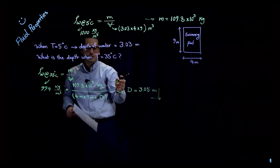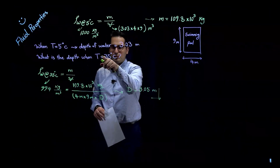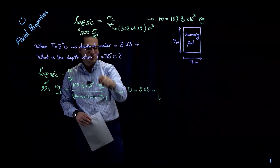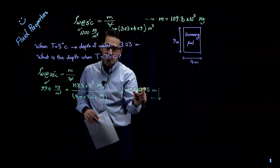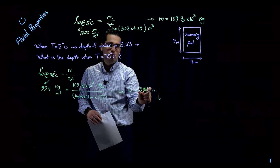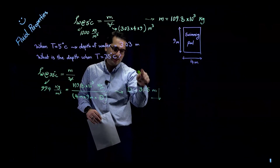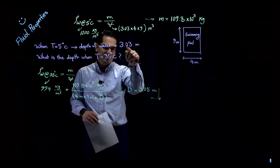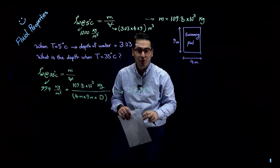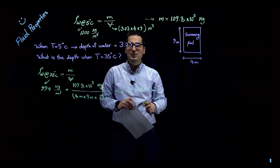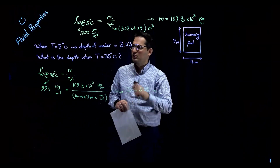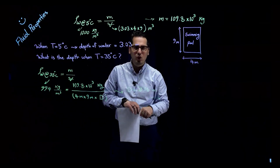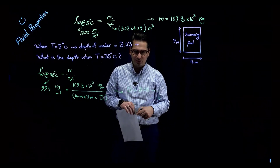When the temperature increases by 30 degrees Celsius, the depth of water in the swimming pool also increases — from 3.03 meters to 3.05 meters. Compare these two numbers and you can see the effect of temperature on the volume and depth of water. That was example number one.